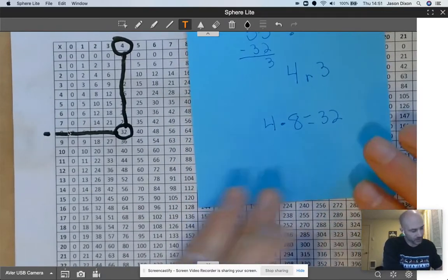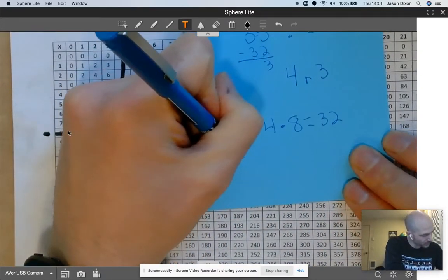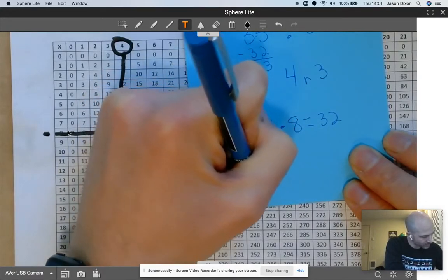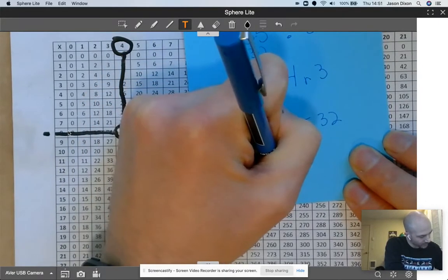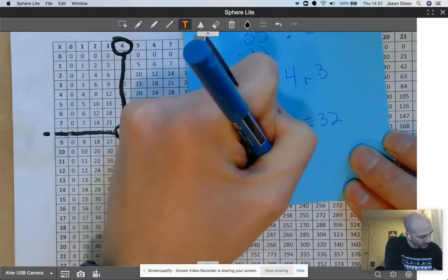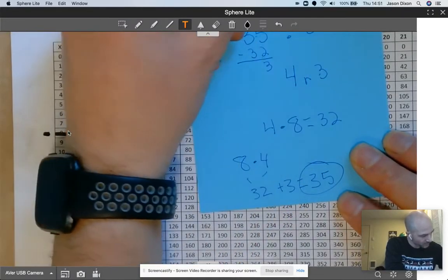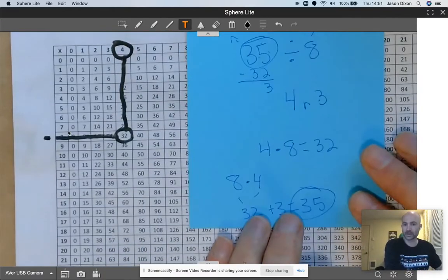So now if you want to check your work, you would just go 8 times 4 is 32 and 32 plus my remainder of 3 equals 35. And got my answer correct.